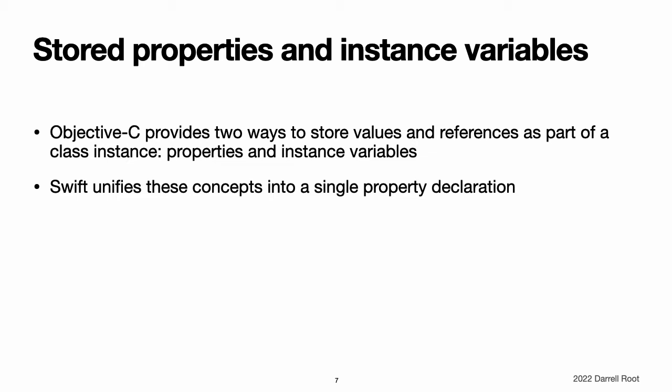Stored properties and instance variables: if you have experience with Objective-C, you may know that it provides two ways to store values and references as part of a class instance. In addition to properties, you can use instance variables as a backing store. Swift unifies these concepts into a single property declaration. A Swift property does not have a corresponding instance variable, and the backing store for a property is not accessed directly.